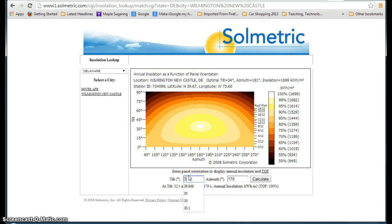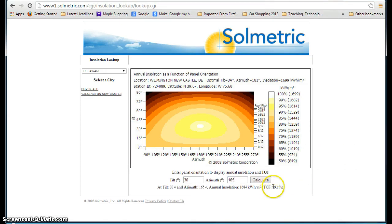So I can enter in whatever I want here, so let's say I'm at 30 degrees and 165, and I hit calculate or enter, and you can see my tilt and orientation factor change from 100 to 99.1%. So under these conditions, I'm losing less than 1% of my output based solely on my tilt and azimuth.